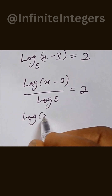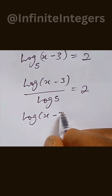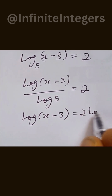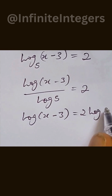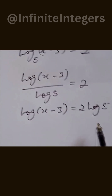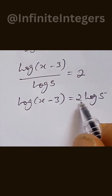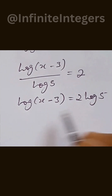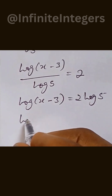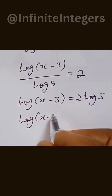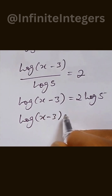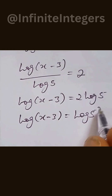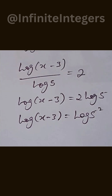Then we can multiply through, so we have log of (x minus 3) equal to 2 log 5. Here we can bring the 2 up to the exponent, so we have log of (x minus 3) equal to log of 5 to the power of 2.